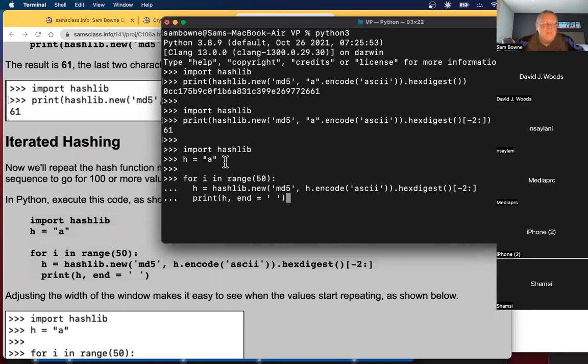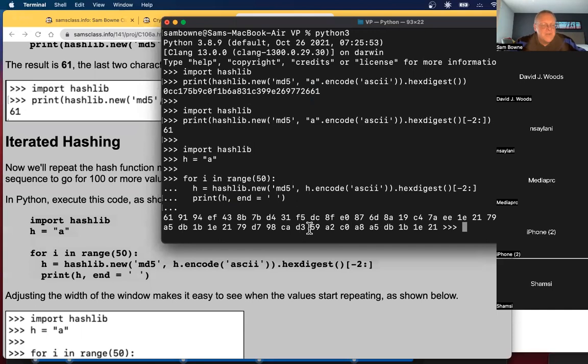All right. Imports hashlib. It starts with the letter A. Now it's going to do 50 of them. Calculating it is just going to print it. And when you put an end here, instead of putting a carriage return after each one, it's going to put a space after each one. So they'll line up like that. So there you go.